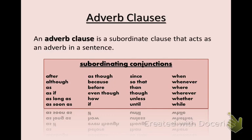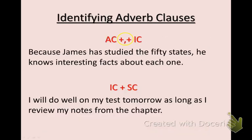In my opinion, adverb clauses are the easiest of the three different types of subordinate clauses. For example, if an adverb clause comes at the beginning of the sentence, it will be followed by a comma. If an adverb clause comes in the middle of the sentence, there will be no commas involved.